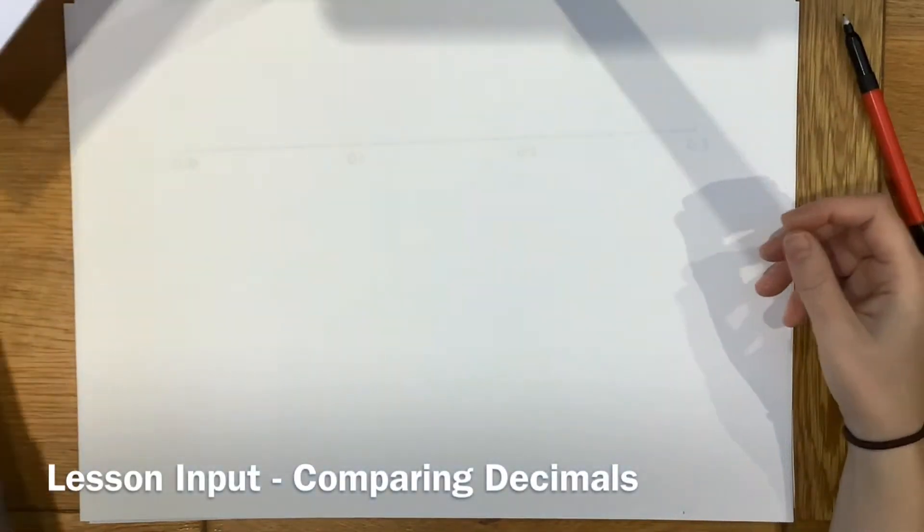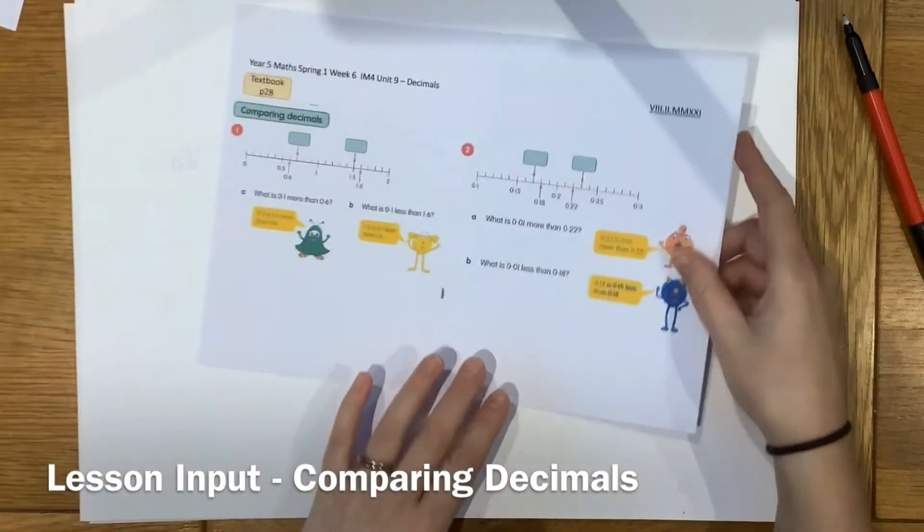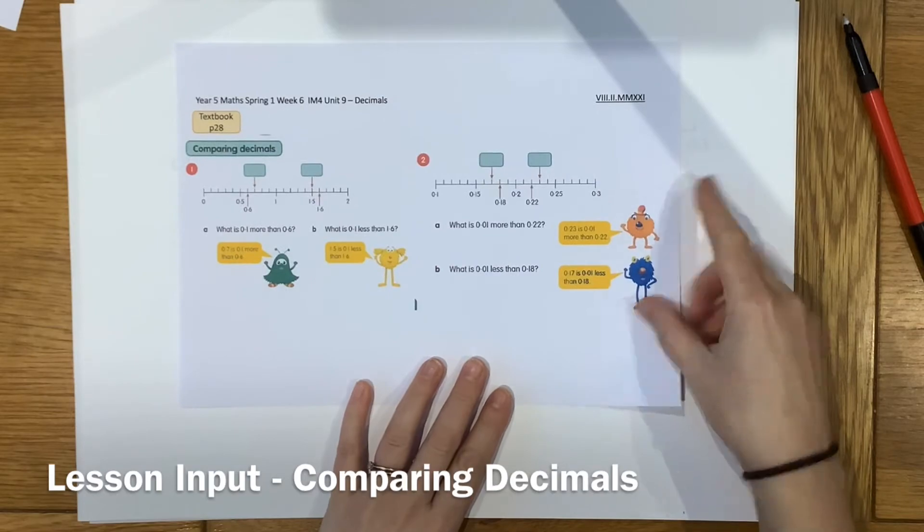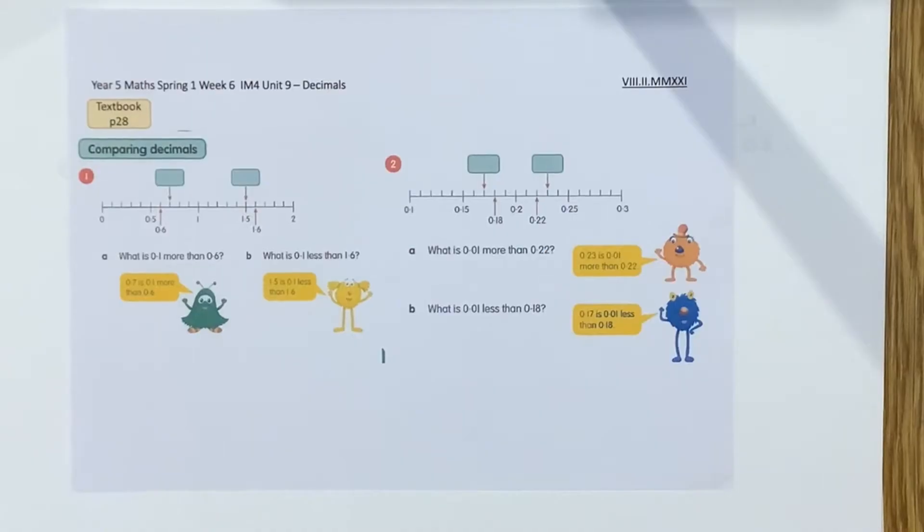Okay, continuing our work on decimals then. Let's have a look at some number lines now to help us compare decimals. Okay, having a look at the textbook then. So these are the textbook pages. There will be a few for you to fill in in a minute and then there will be a practice as usual.